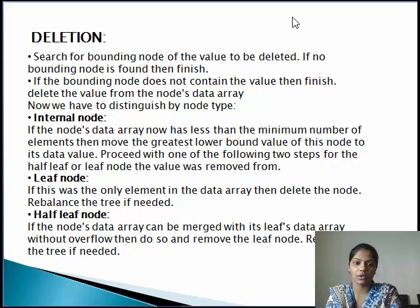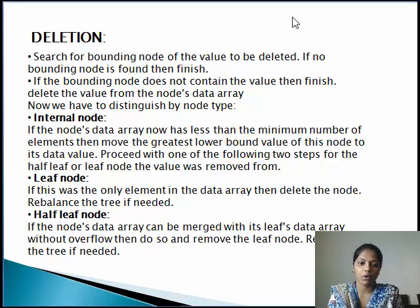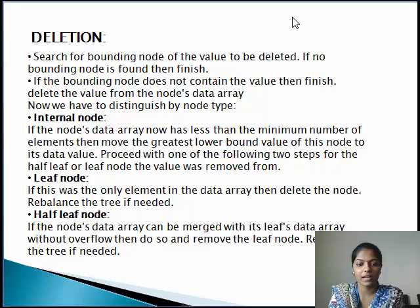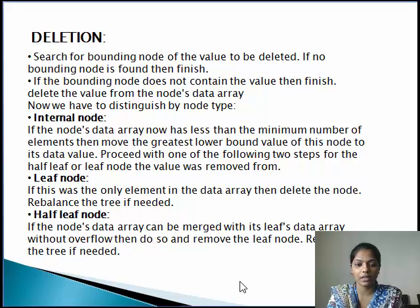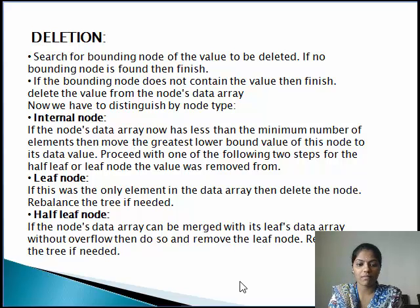Now we are going to see the deletion algorithm in T-tree. Search for the bounding node of the value to be deleted. If no bounding node is found, then finish. If the bounding node does not contain the value, then finish. Delete the value from the node data array. Now we distinguish by node type — internal node, leaf node, and half-leaf node. For an internal node, if the node data array now has fewer than the minimum number of elements, move the greatest lower bound value into its data array. For a leaf node, if this was the only element in the array, delete the node and rebalance the tree if needed. For a half-leaf node, if the node data array can be merged with its leaf data array without overflow, do so and remove the leaf node, then rebalance the tree if needed.